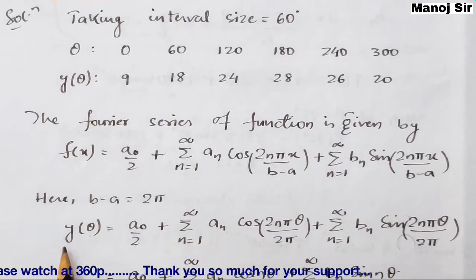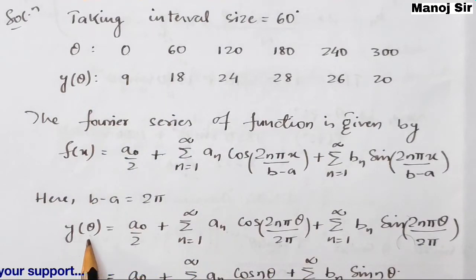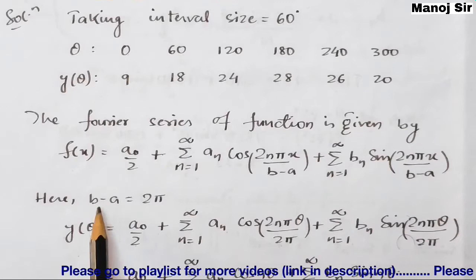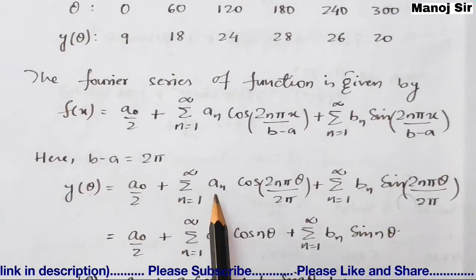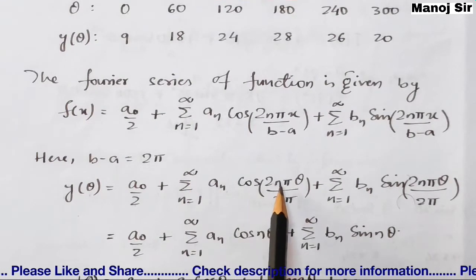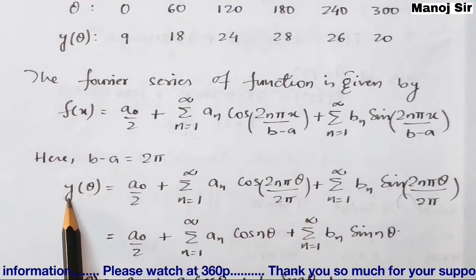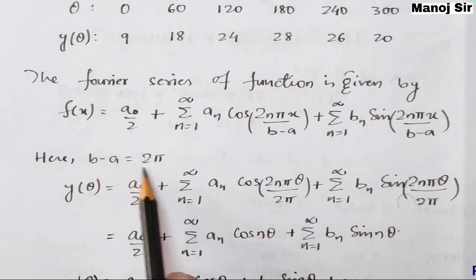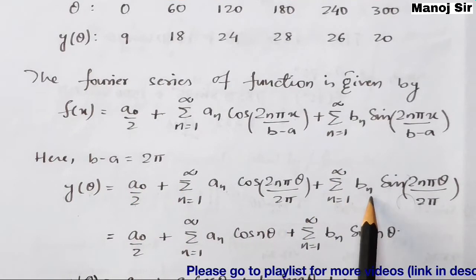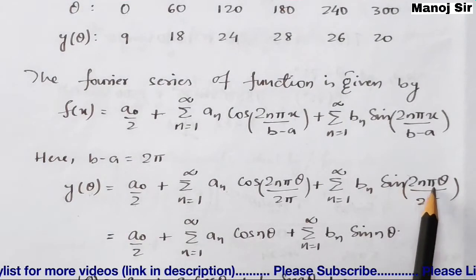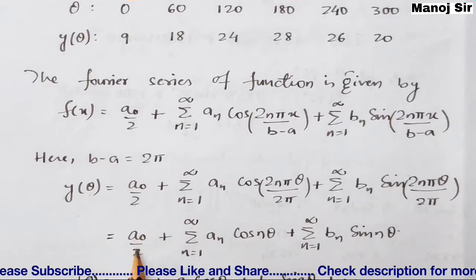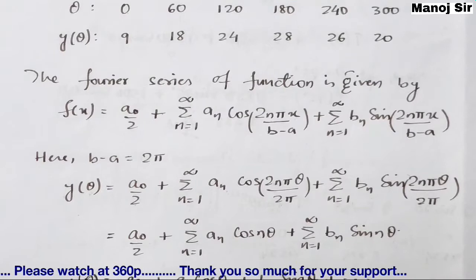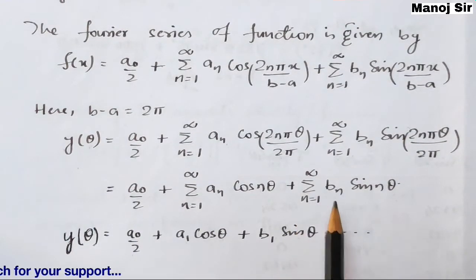Since f(x) is y(θ) here, and b−a = 2π, the formula becomes: y(θ) = a₀/2 + Σ aₙ cos(2nπθ/2π) + Σ bₙ sin(2nπθ/2π). The 2π cancels, simplifying to: y(θ) = a₀/2 + Σ aₙ cos(nθ) + Σ bₙ sin(nθ).